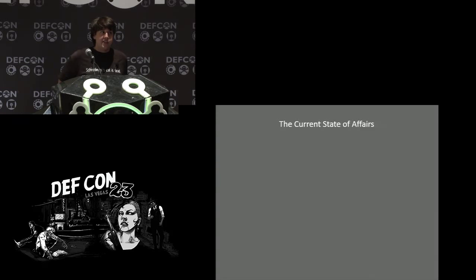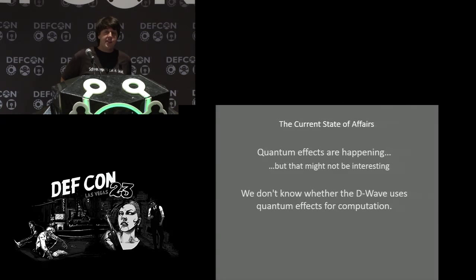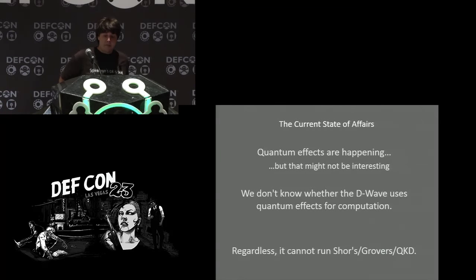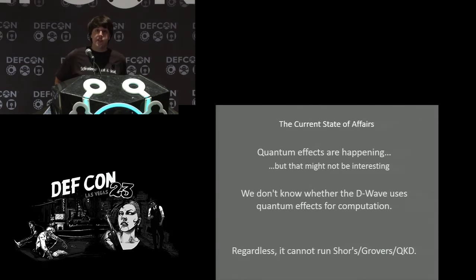Because of all this misinformation, there's a lot of polarized debate about what the D-Wave can do. To my knowledge, this is the current state of affairs: quantum effects are happening, but this might not actually be interesting — quantum effects happen everywhere, even in NAND flash. The real question is whether the D-Wave uses quantum effects for computation. Regardless, it can't run the standard quantum algorithms everyone gets excited about. D-Wave has made design choices in pursuit of solving NP-complete problems that mean universal quantum computation can't happen on their machines. To their credit, they've also made advances in cooling and power consumption, and some techniques may be useful for scaling standard quantum computation.